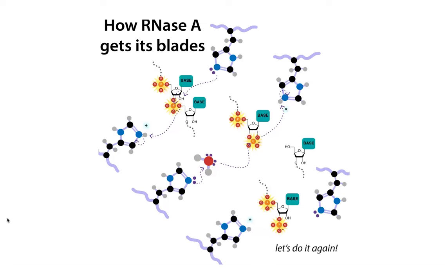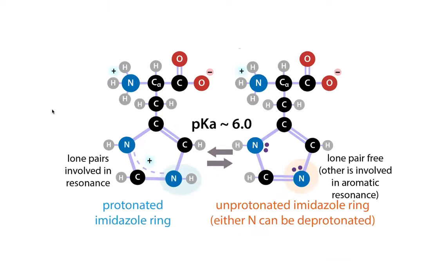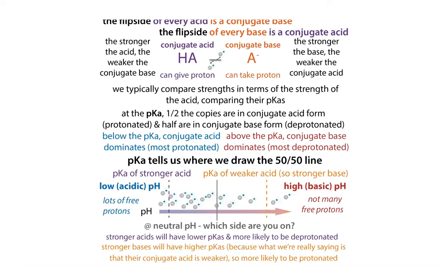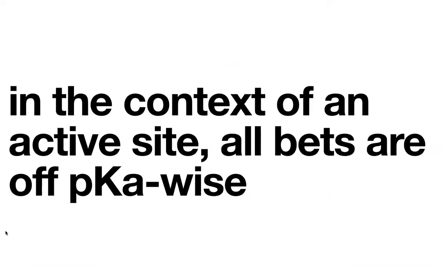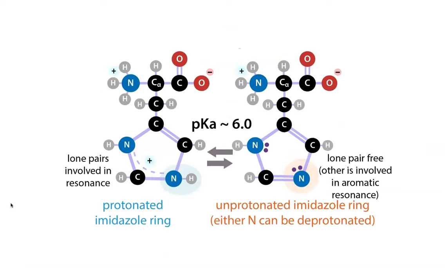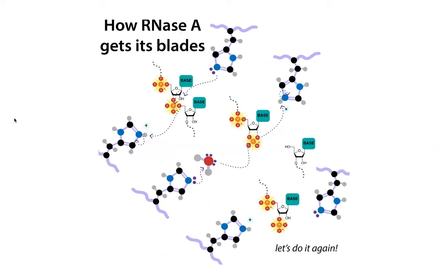RNase A has a cool mechanism that helps us understand what's going on. It uses a ping-pong mechanism between two histidines. Histidine has a pKa around 6. The pKa refers to the pH at which half of something is protonated and half is deprotonated. At higher pH there are fewer protons, so less than half is protonated; at lower pH, more than half is protonated. In the context of an active site, all bets are off with this pKa — but we can see that histidine can easily go back and forth between protonated and deprotonated forms.